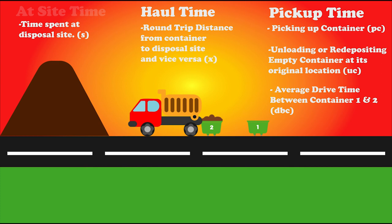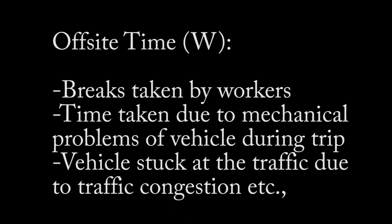The next term is the time spent at the site. As discussed earlier, the time spent at the site falls under the category of at-site time. The sum of these three categories — at-site time, haul time, and pickup time — combined together gives us the time required for a hauled container in a round trip. There may also be another term called off-route time, indicated by W. This off-route time deals with out-of-order activities such as traffic congestion, vehicle problems causing stops at the roadside, and breaks taken by workers during the carrying of waste.